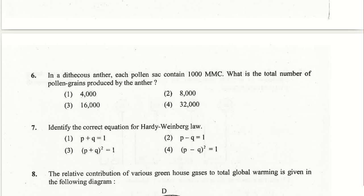In a dithecous anther, each pollen sac contains 1000 microspore mother cells. There are four sporanginous cavities, so 4000 microspore mother cells total. Each undergoes meiosis to produce four haploid pollen grains, all functional. So 4000 × 4 = 16,000 pollen grains. The answer is the third option, 16,000.